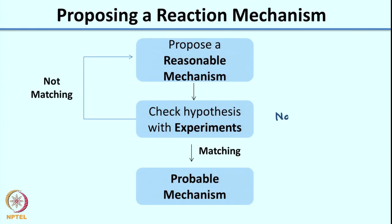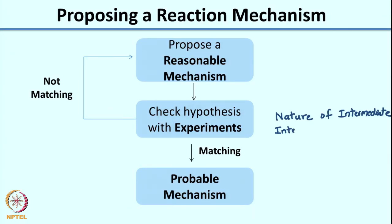Another very important clue about a reaction is what is the nature of the intermediate. An intermediate is very important because once you understand it, it is a very solid clue as to how the reaction is taking place. You can also do experiments to see whether an intermediate exists or not. The next set of experiments we would be looking at involves gathering information about the nature of the intermediate. It is very difficult to measure the intermediate using spectroscopic techniques because they are very transient, so we look at alternate methods where indirectly you can get information about the nature of the intermediate.